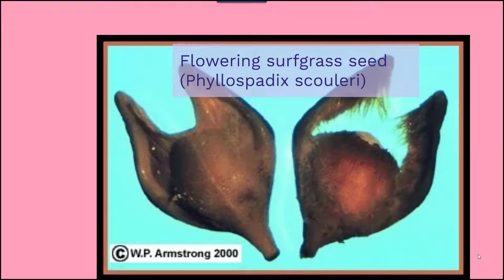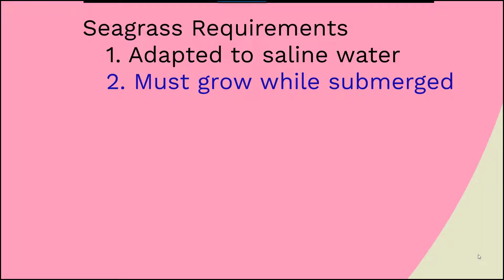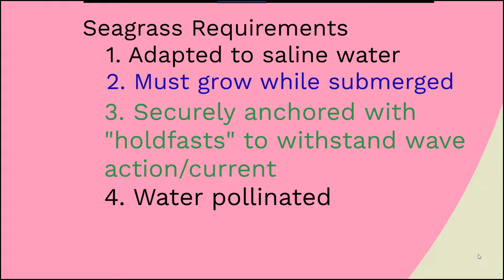There are subtle differences between a flowering surf grass and a non-flowering surf grass. Some requirements to survive in a marine habitat include: being adapted to a saline water environment, growing while submerged, being anchored via a rhizome to withstand wave action and currents — a holdfast is more attributable to algae — and being able to engage in water pollination.